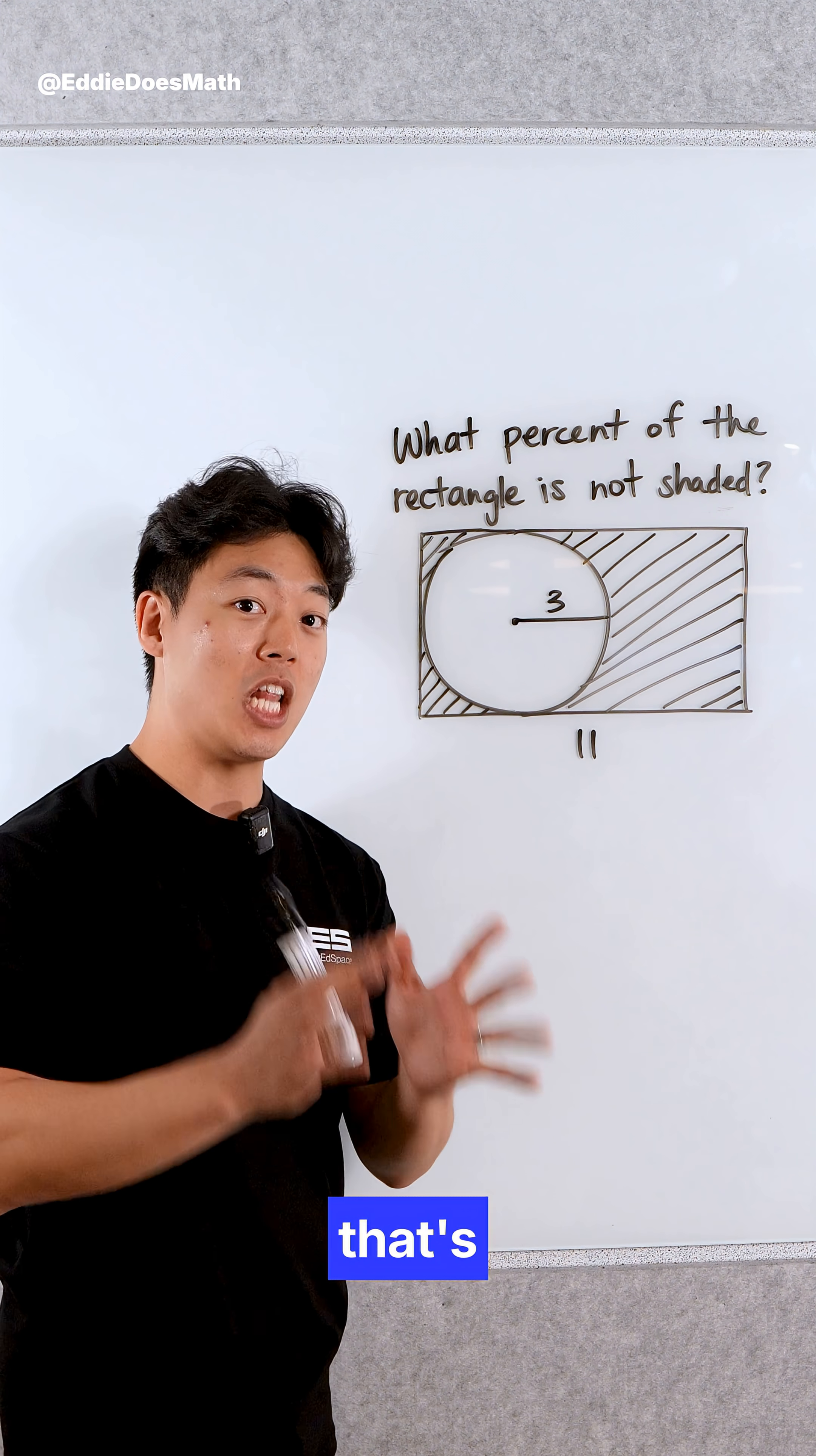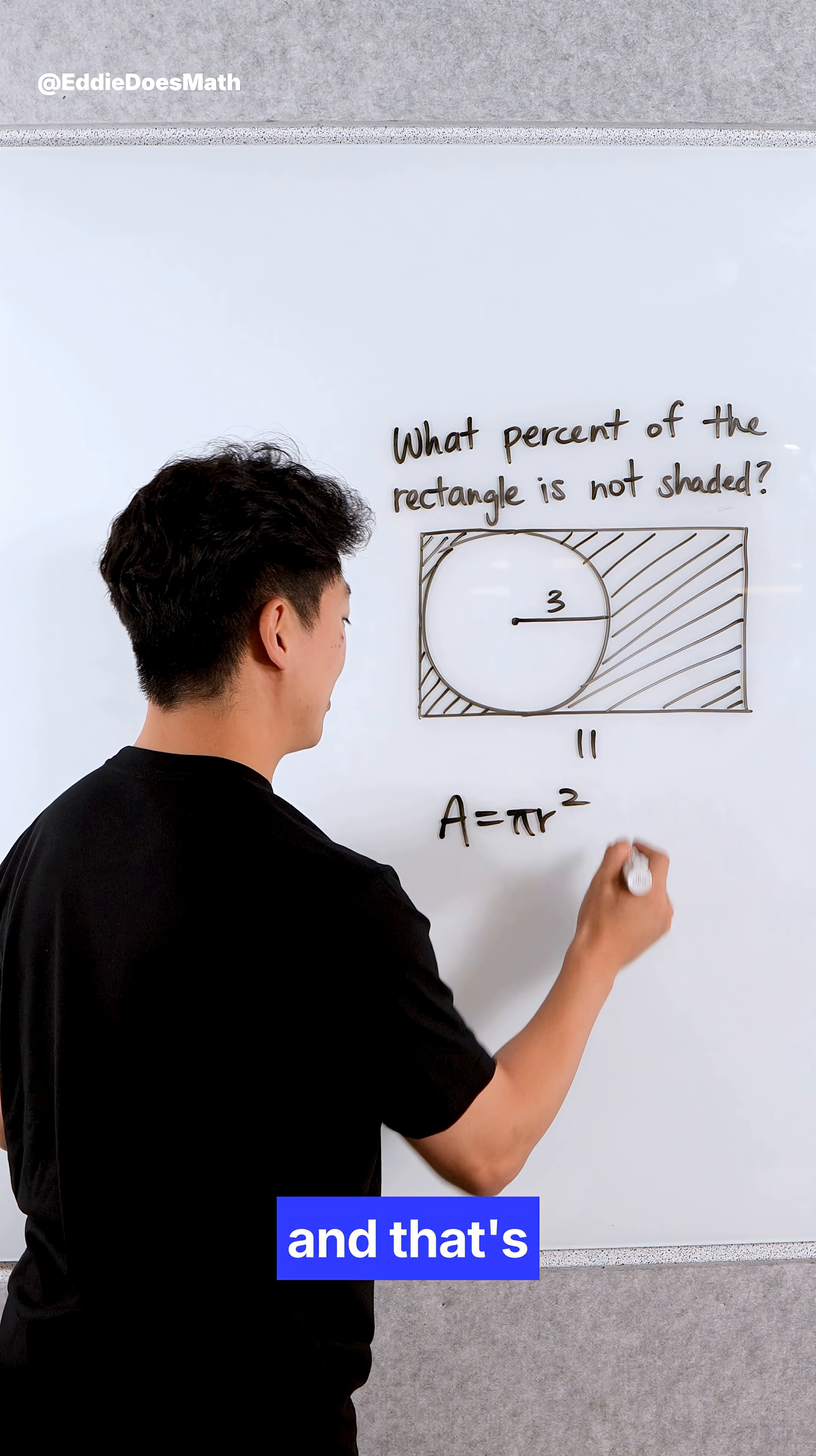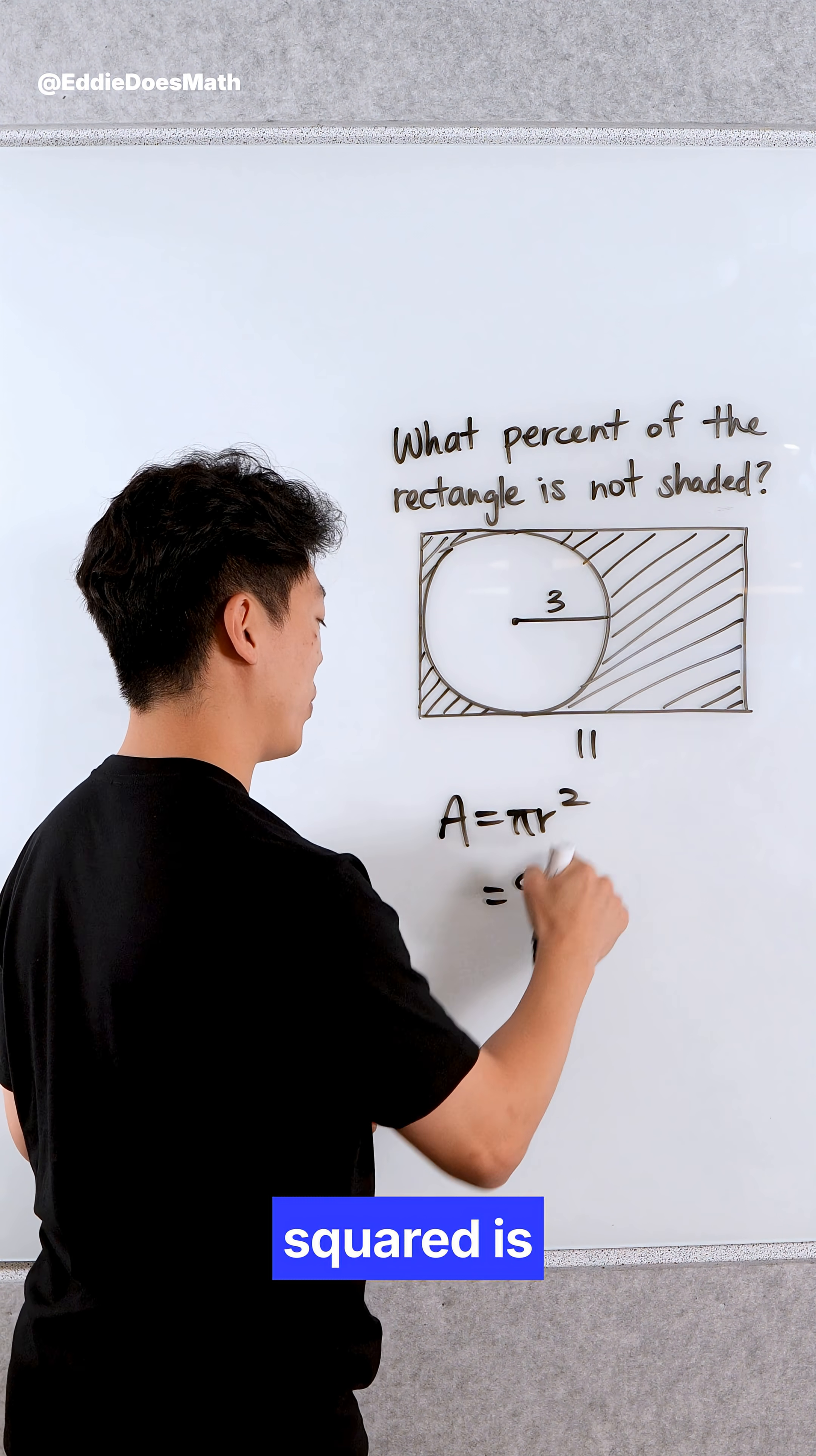Finding the area of the region that's not shaded is rather simple. We take the area of the circle and that's just pi r squared, and that's 9 pi since 3 squared is 9.